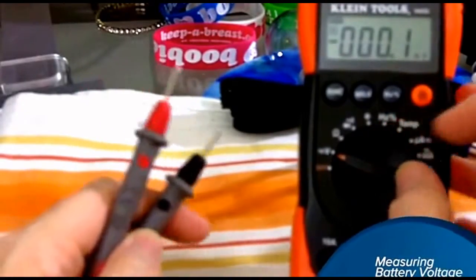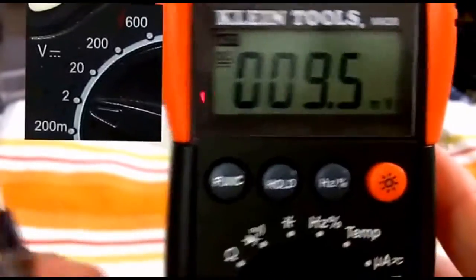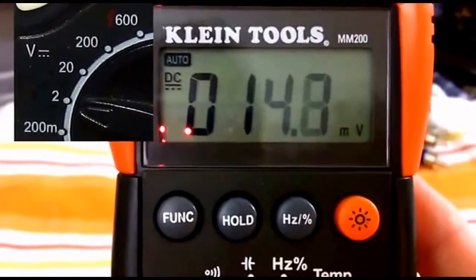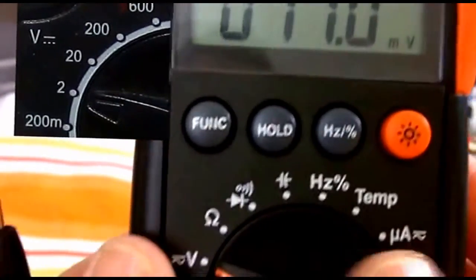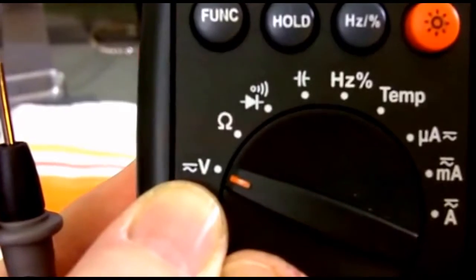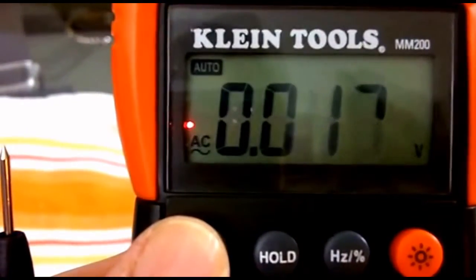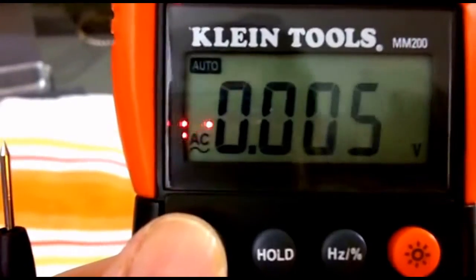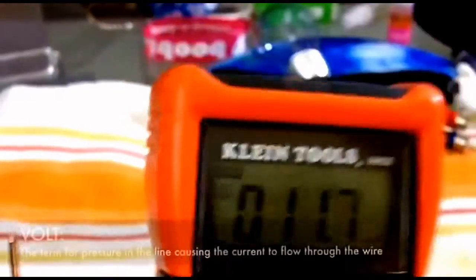Let's get started. Let's put it to voltage. And it is set to direct current. And yours may look like the inset picture. Set to V for voltage. Not the wave. That would be if you were checking an outlet. So we have it on direct current for batteries.